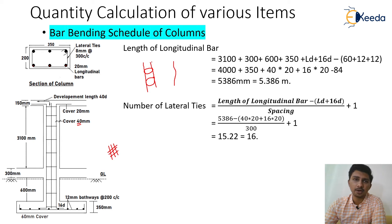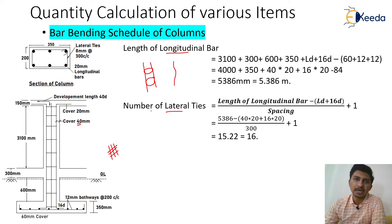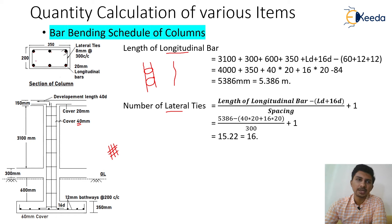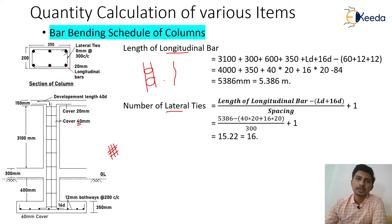There are two types of reinforcement in a column: the longitudinal vertical bars and the lateral ties. We need to calculate the length of the bar and the number of bars — these are the only two quantities for every reinforcement. For longitudinal bars we simply count them, but for lateral ties we need a formula to find how many are placed throughout the column length.